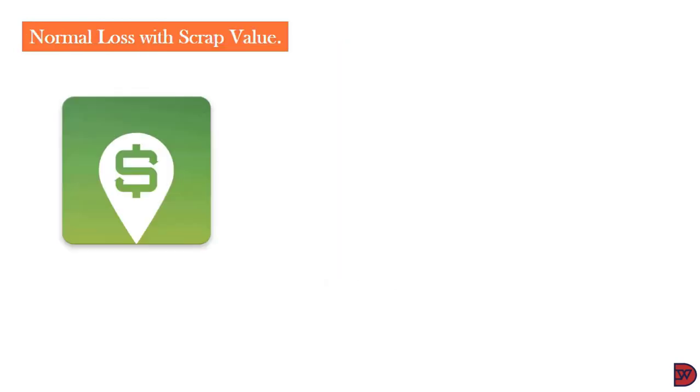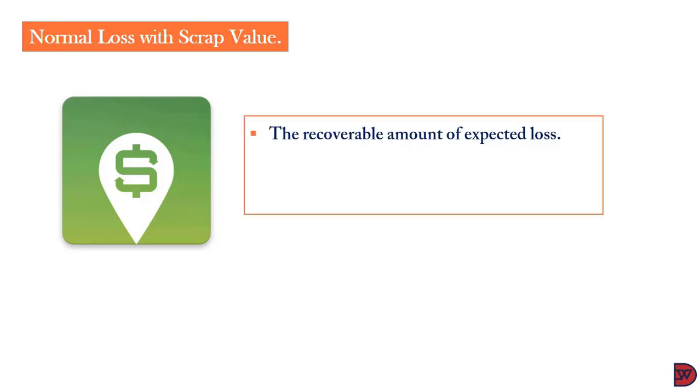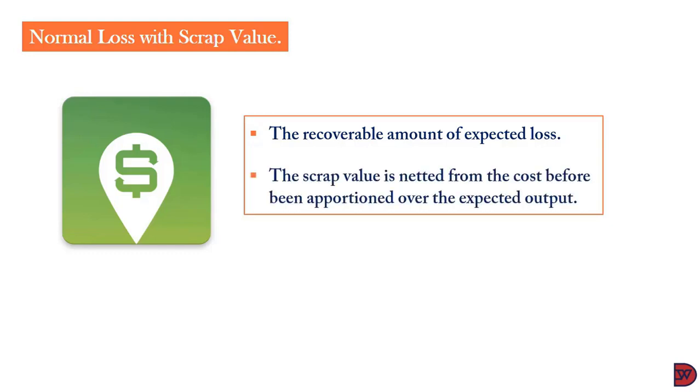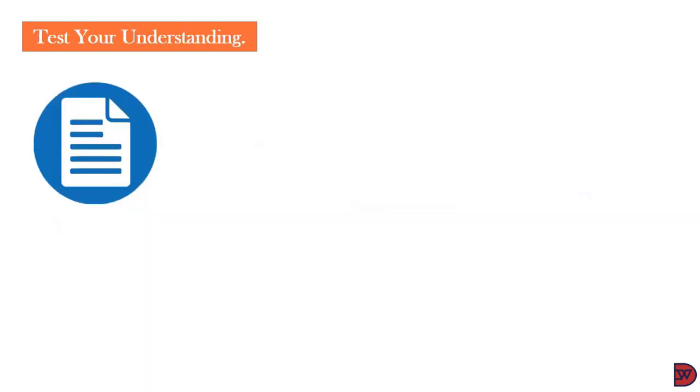Let's look at a situation where the normal loss has a scrap value or can be sold. There are circumstances where monetary gain can be derived but beneath the market value of a regular output. If a regular product is selling for $5, the lost product is going to be sold for $4. The scrap proceeds or the saleable amount is to be deducted from the total cost of the process before being apportioned to the actual output.